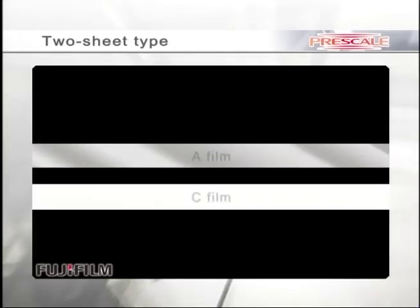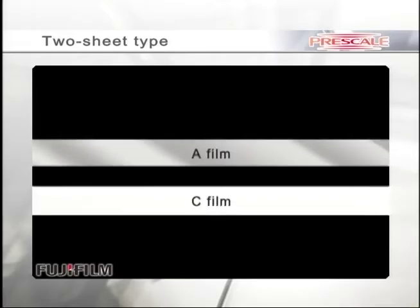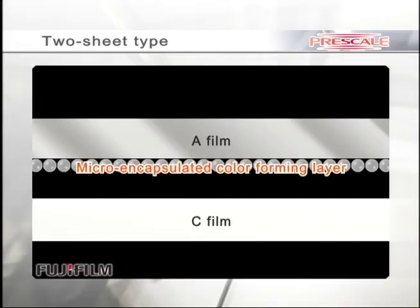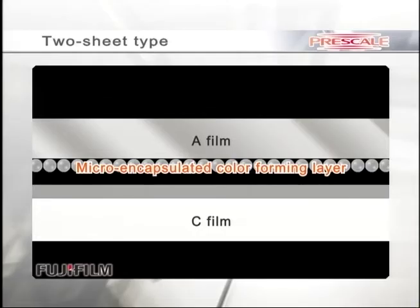The two-sheet type consists of A-film and C-film. A-film has a microencapsulated color forming layer, and the C-film has a color developing layer on its surface.